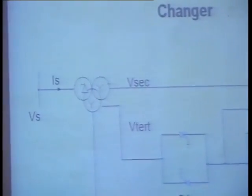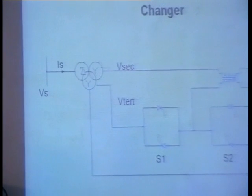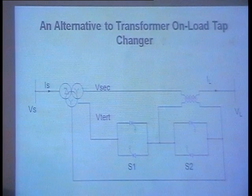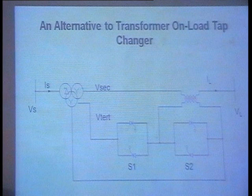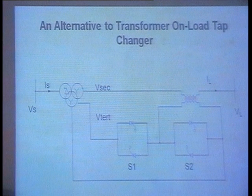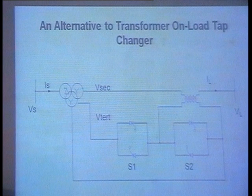If the secondary is open, then secondary current becomes 0, secondary flux — the secondary opposing flux becomes 0. Then from the primary, large flux is coming. That large flux will damage the core and in the secondary, very high voltage — kilo volts or mega volts — will be induced, and the operator working on the secondary side will get a shock. It is not safe. So you are not supposed to open the secondary of a CT, which will be dangerous to the people operating on the secondary.